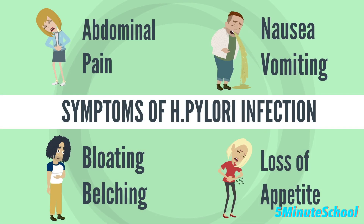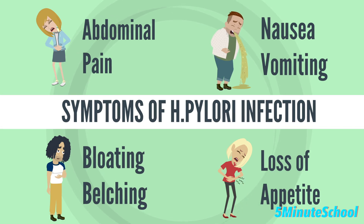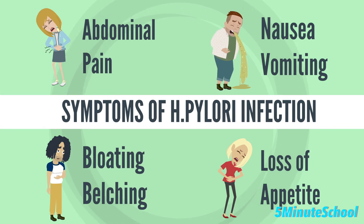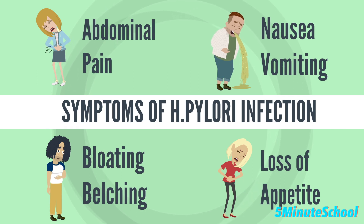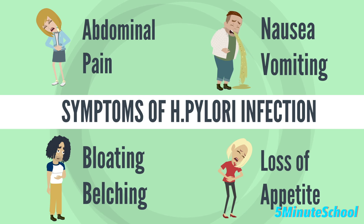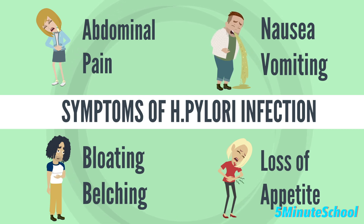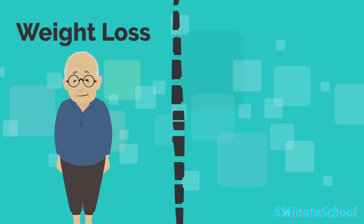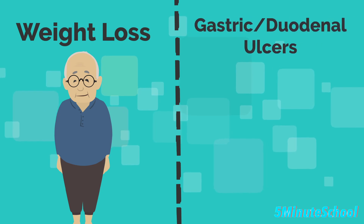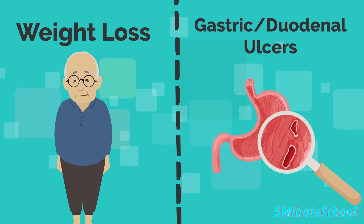With H. pylori infection, some people may not experience any symptoms at all, but when symptoms do occur they can include abdominal discomfort especially in the upper abdomen, nausea and vomiting, bloating and belching, loss of appetite, unintended weight loss, and gastric and duodenal ulcers which can lead to bleeding and discomfort.